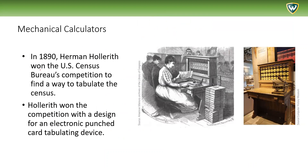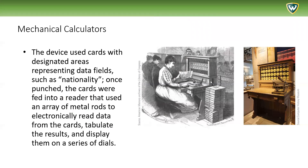In 1890, Herman Hollerith won the U.S. Census Bureau's competition to find a way to tabulate the census — meaning create the calculations and categories for counting. Hollerith won with a design for an electronic punched card tabulating device. The device used cards with designated areas representing data fields such as nationality. Once punched, the cards were fed into a reader that used an array of metal rods to electronically read data from the cards, tabulate the results, and display them on a series of dials.